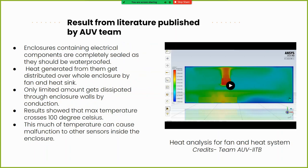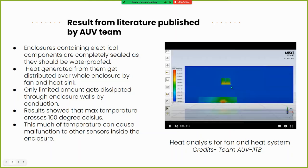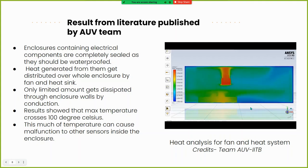To understand why this concept is necessary, let's look at literature published by the AUV team of IIT Bombay. The enclosures containing electrical components are completely sealed and waterproofed, as the AUV — autonomous underwater vehicle — works in water. Heat generated from the components gets distributed over the whole enclosure by fan and heatsink. As shown in the video, the central chip is the inception point of heat, and only a limited amount gets dissipated through enclosure walls by conduction. The results showed that maximum temperature crossed 100°C, which is particularly harmful for heat-sensitive components inside.